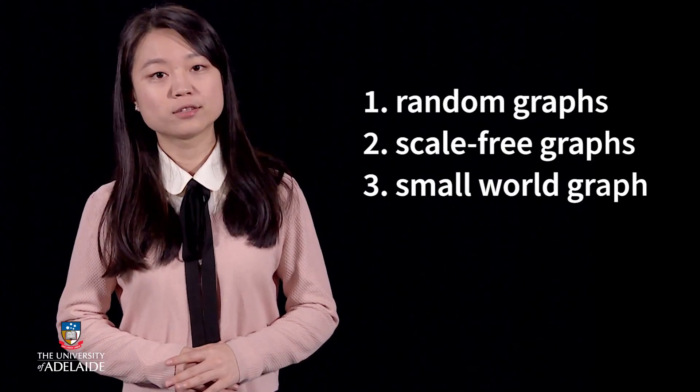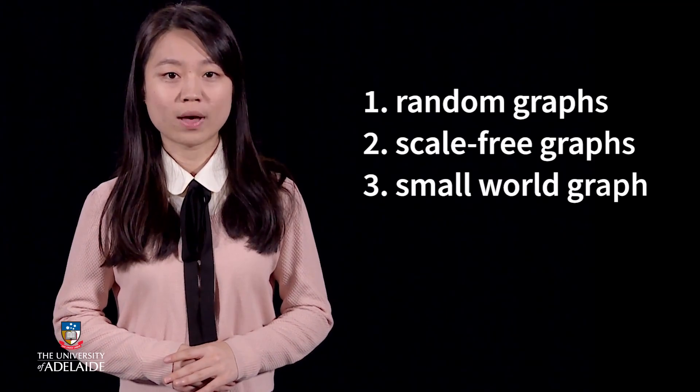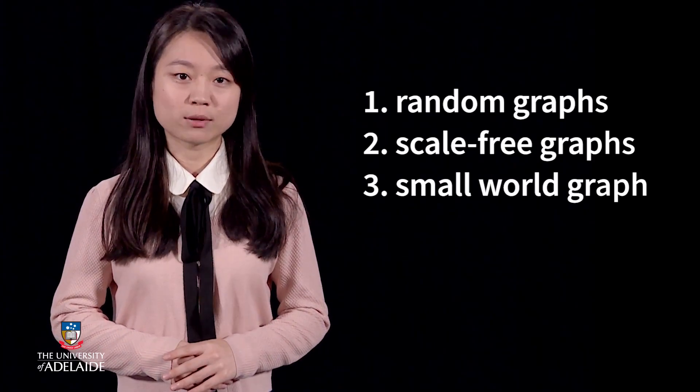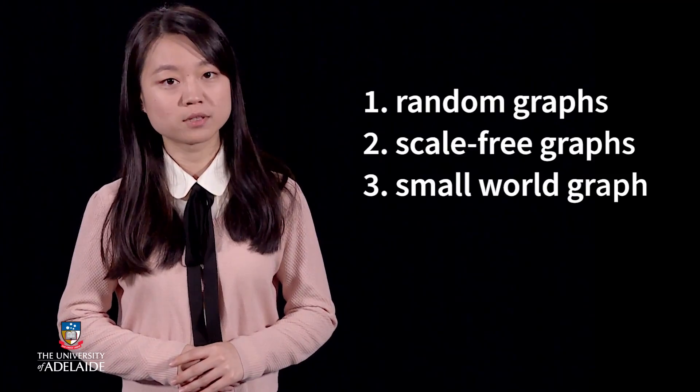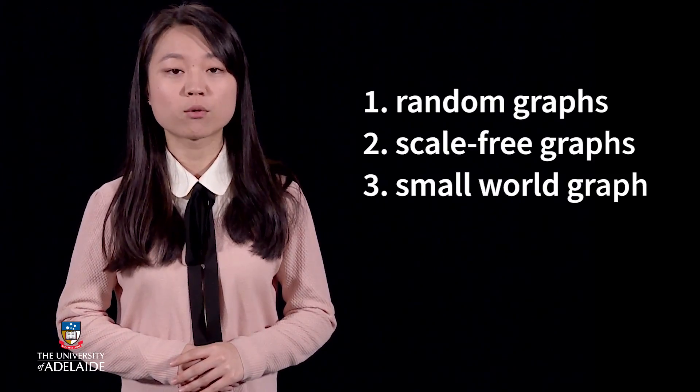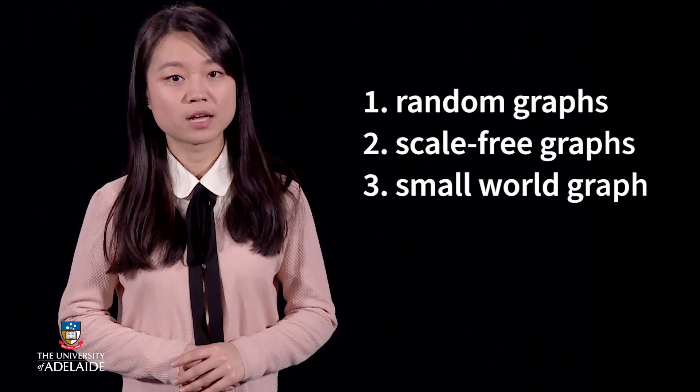However, the real challenge is to decide where to put edges between the nodes so that you have a graph that reproduces the complexity of the real network. The common ways to model a web or social network include building random graphs, scale-free graphs, and a small world graph.